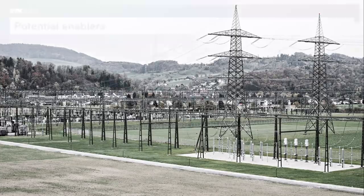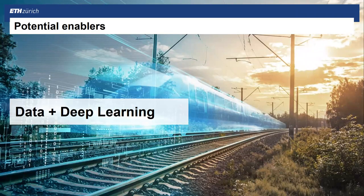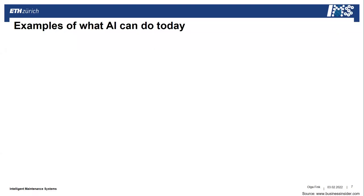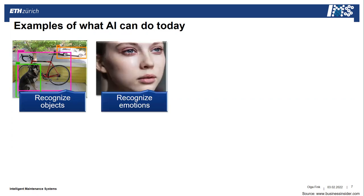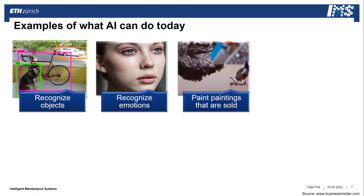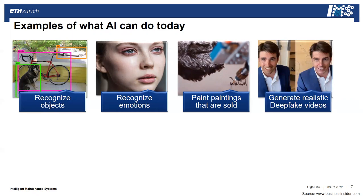These challenges have their difficulties, but since more and more data has been collected on the condition of those systems, and due to the progress of deep learning, those appear to be potential enablers. AI algorithms have been able to recognize objects, recognize emotions, paint paintings sold at Christie's auctions, and deep fakes have achieved things not previously considered possible.